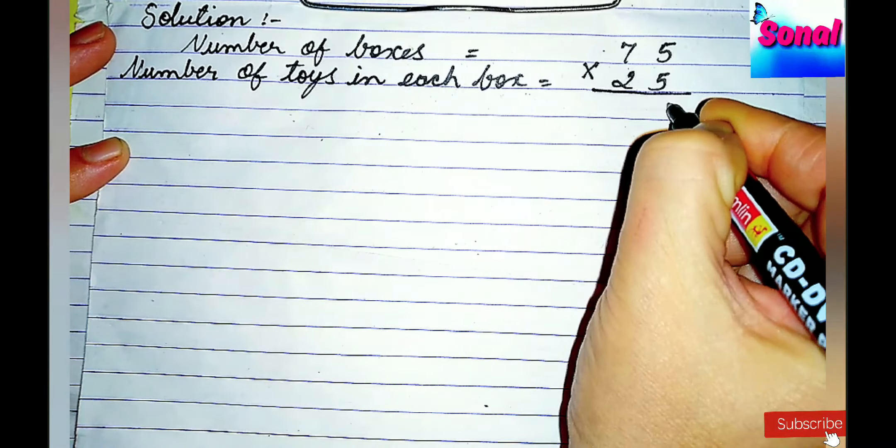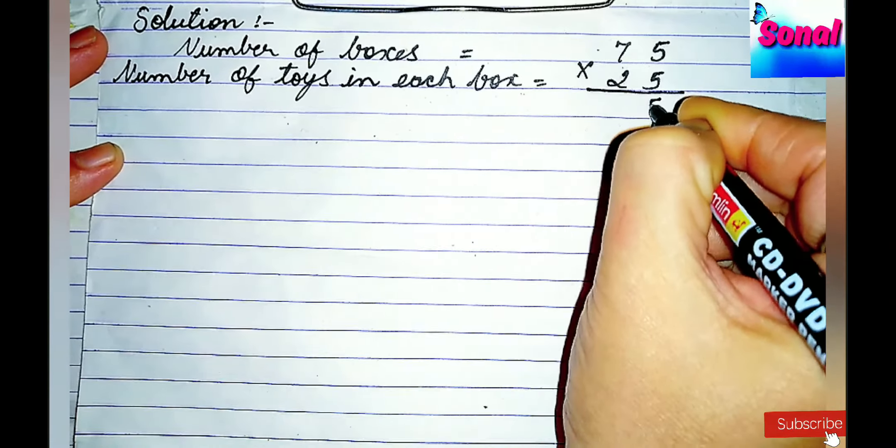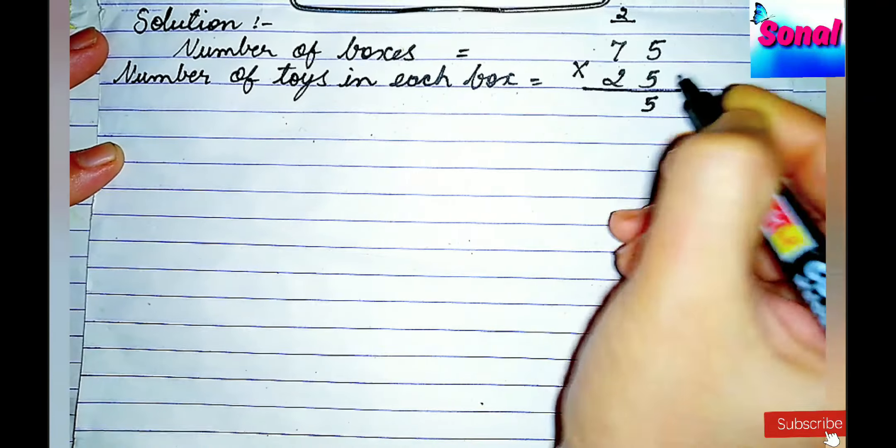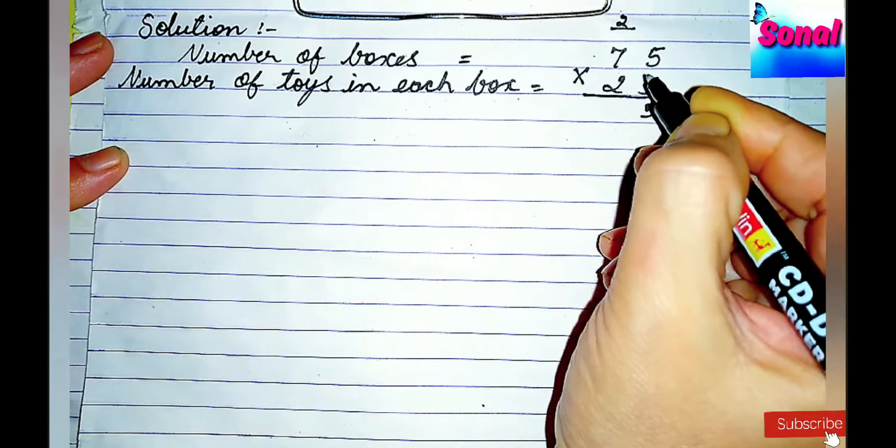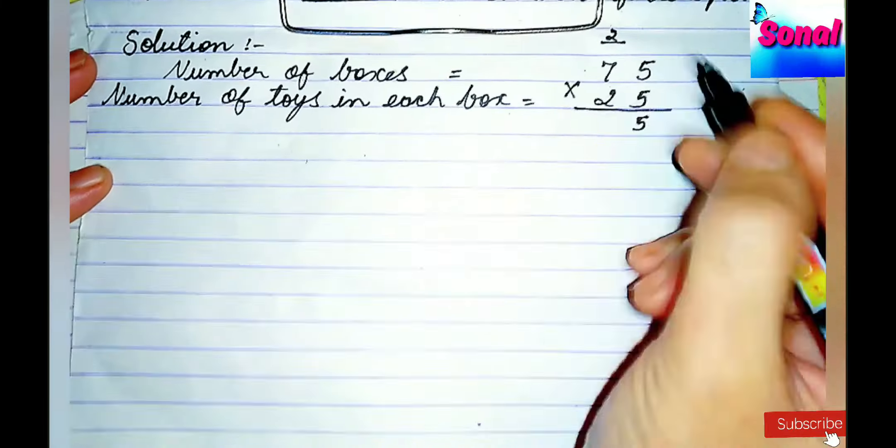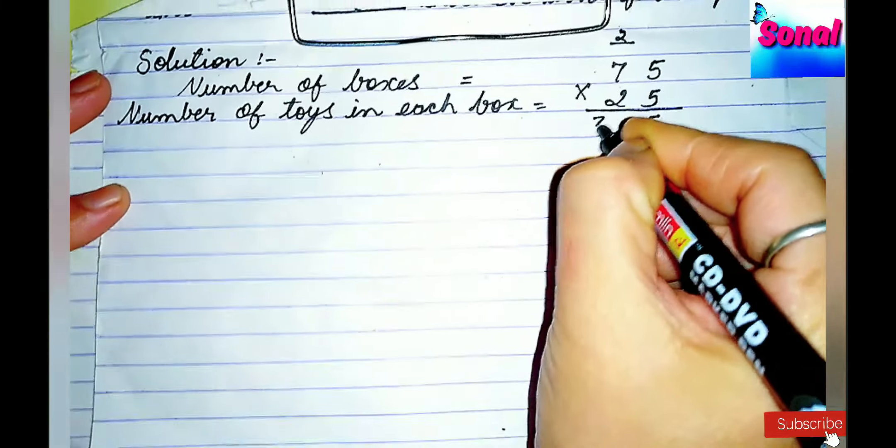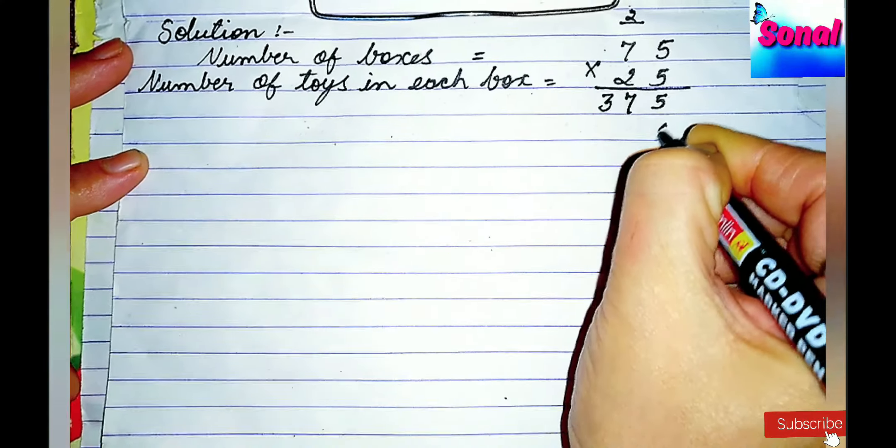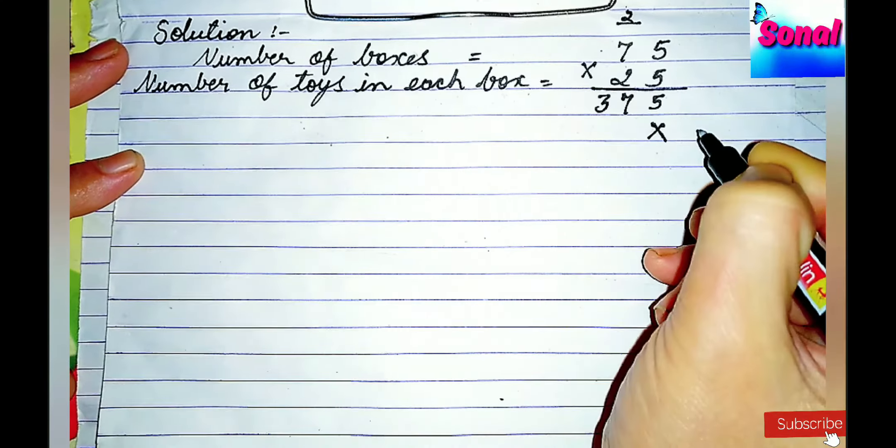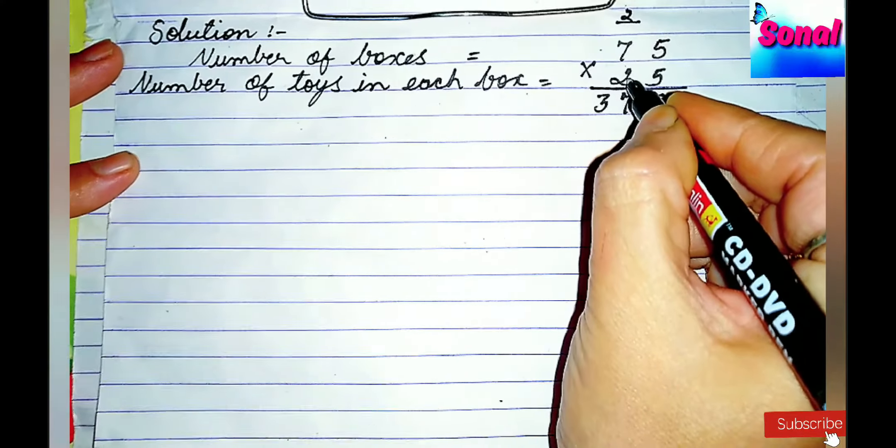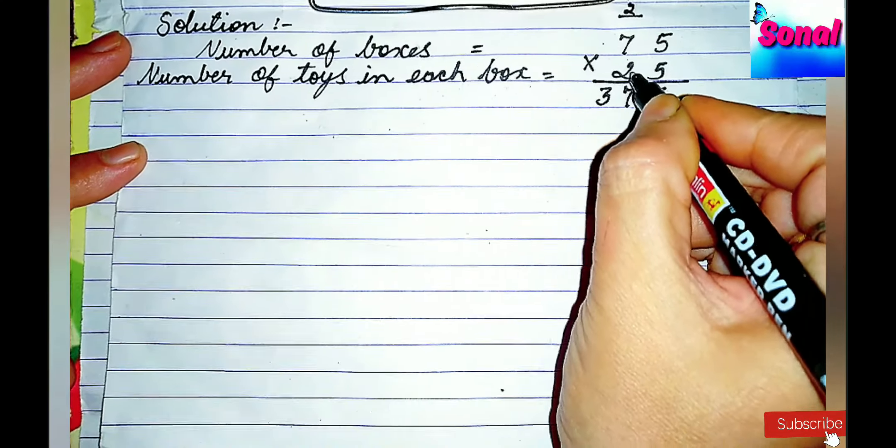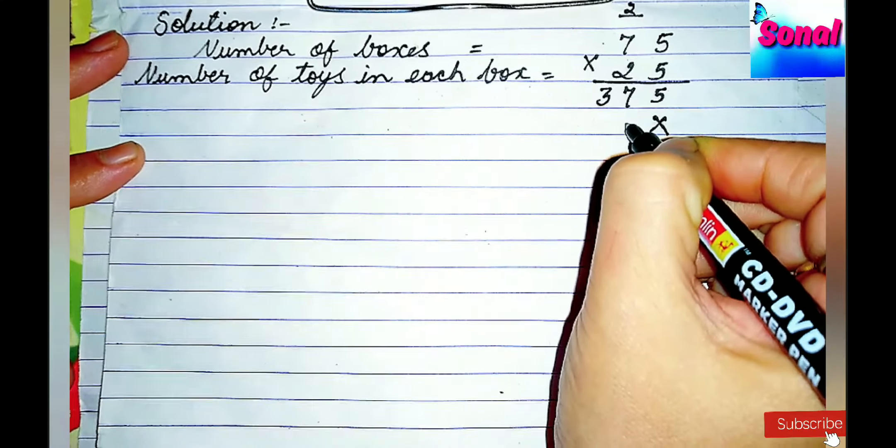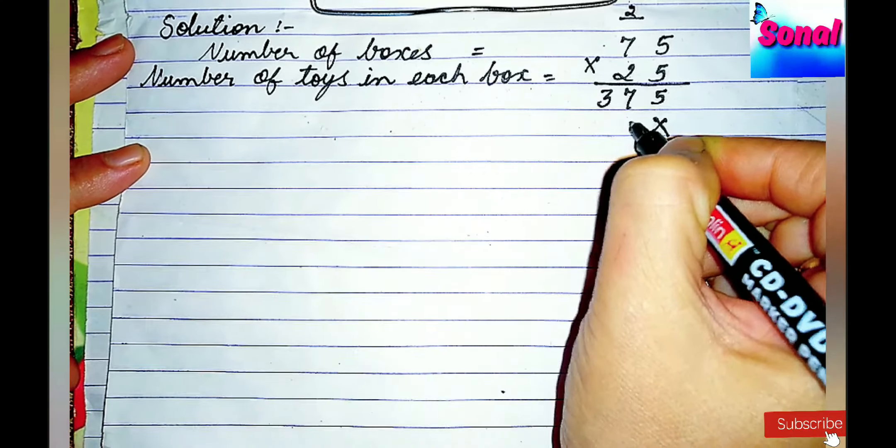Now, we will multiply both of them. So, five fives are 25, write 5, carry over 2. Seven fives are 35, 36, 37. 375. Put a cross below the one's digit. Because 2 is on the tens place.